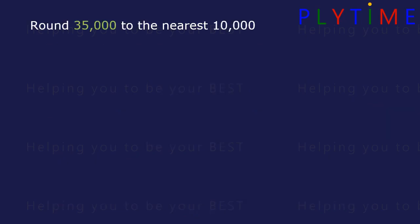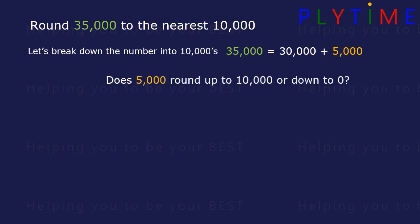Round 35,000 to the nearest 10,000. Let's break down the number into 10,000s. It's the same as 30,000 plus 5,000. Now the question's asking does 5,000 round up to 10,000 or down to zero?